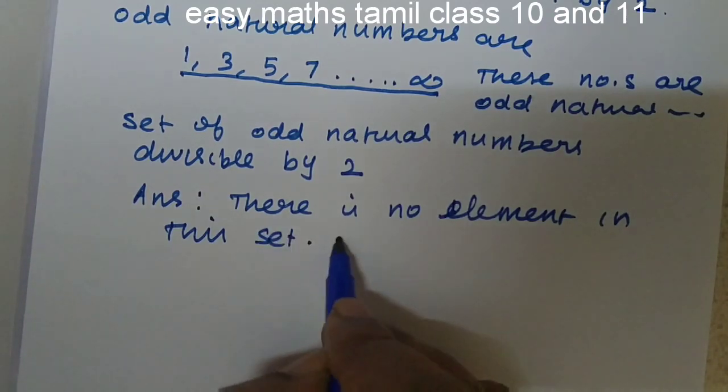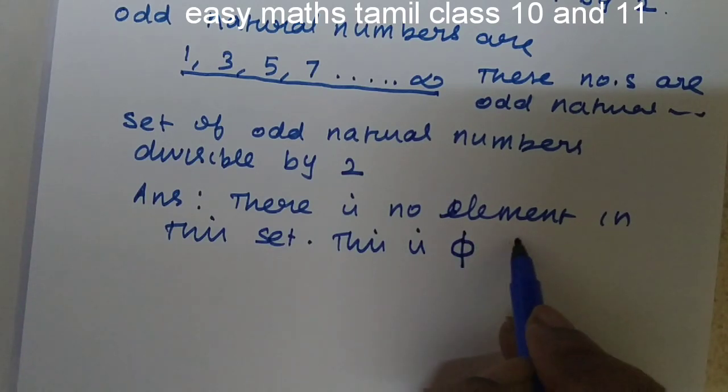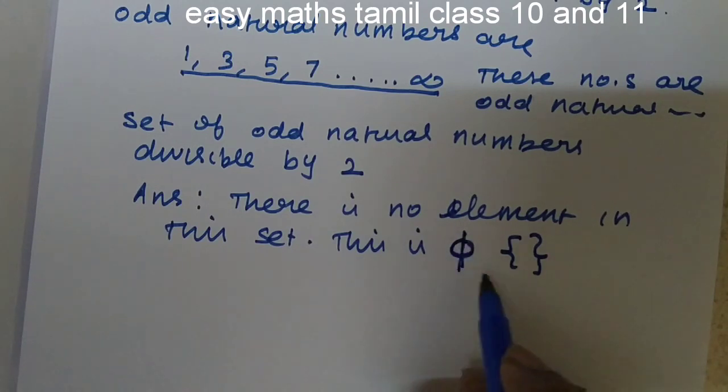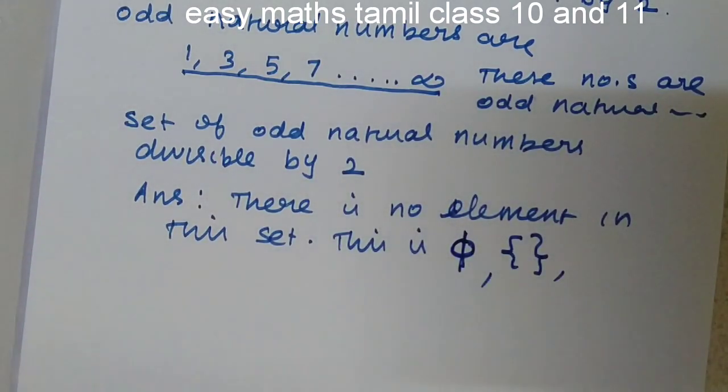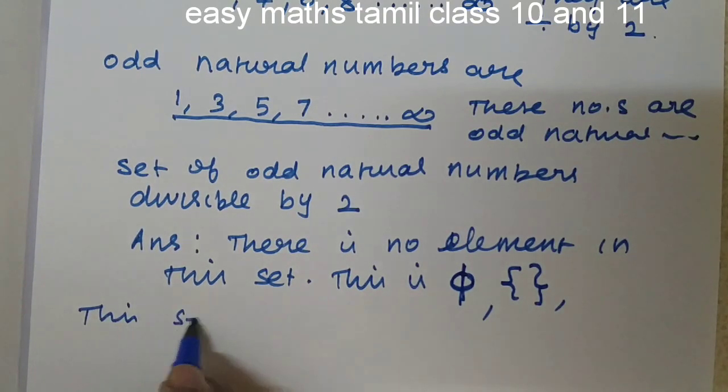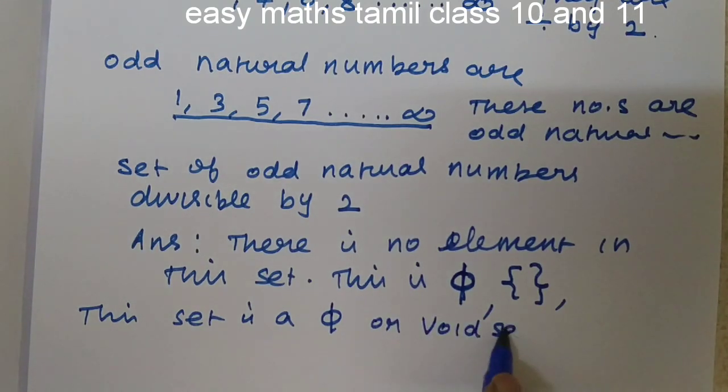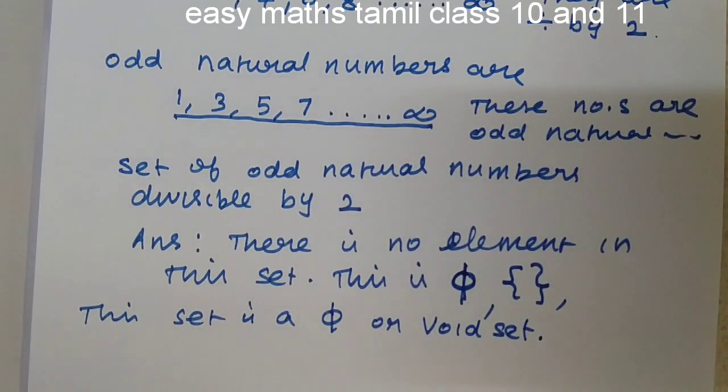So this is a null set and it is represented by the symbol phi. So this set is a null set or void set, also called as empty set.